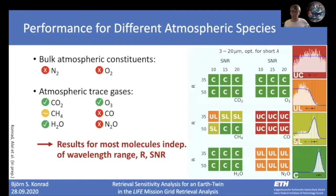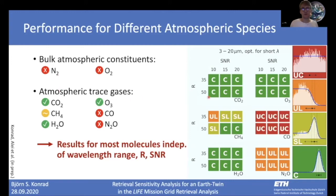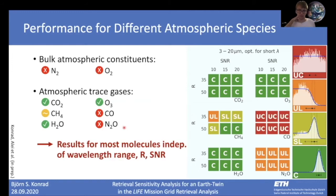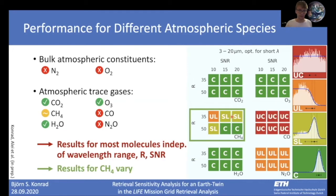Now we go on to the atmospheric species. First, the atmospheric bulk constituents oxygen and nitrogen are not retrieved, even though we consider features from collision-induced absorption. For the atmospheric trace gases, the results are summarized here — the labels C, U, L, S stand for different types of posterior distributions, from unconstrained all the way to a constrained Gaussian posterior. We find that CO2, O3, and H2O are nicely retrieved for all wavelength ranges, R, and SNR. Similarly, CO and N2O are not retrievable for any of the considered R and SNR. The interesting behavior occurs for methane, because here we have a strong dependence on R and SNR.